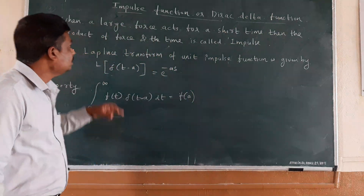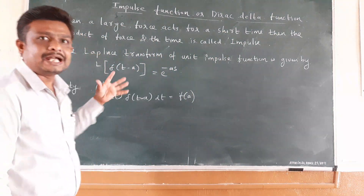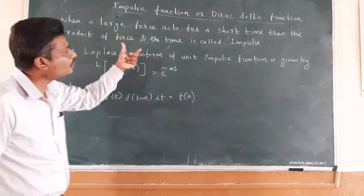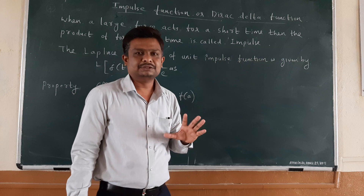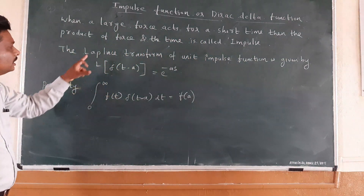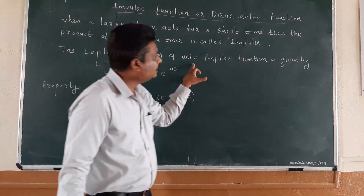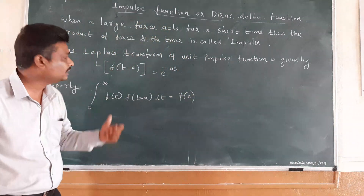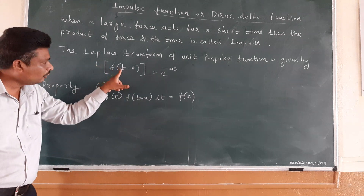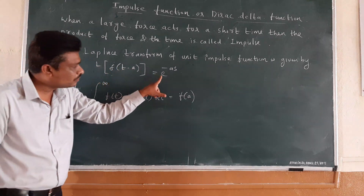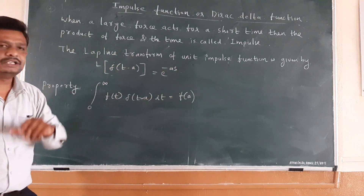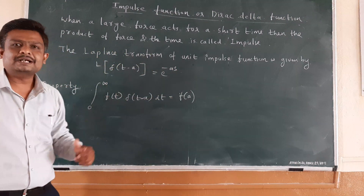So let us know what is impulse. Impulse is nothing but when a large force acts for a short time, then the product of force and time is called impulse. The Laplace transform of the unit impulse function — the Dirac delta function — is given by: L{δ(t − a)} = e^(−as). This is the formula for the unit impulse function.